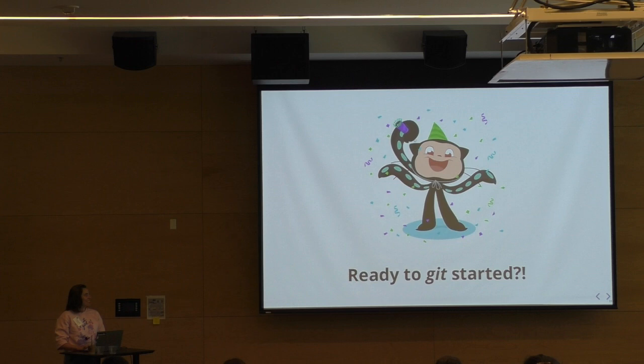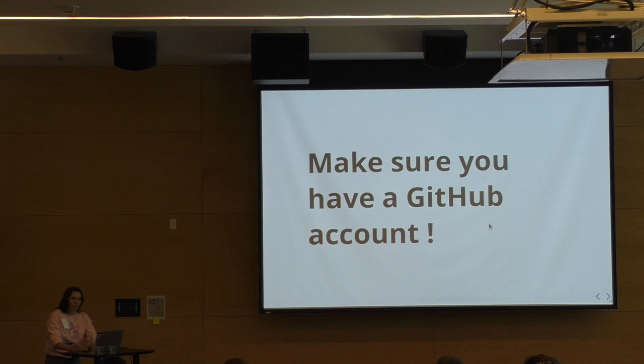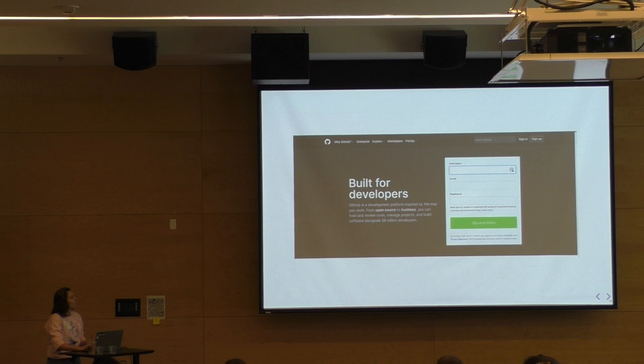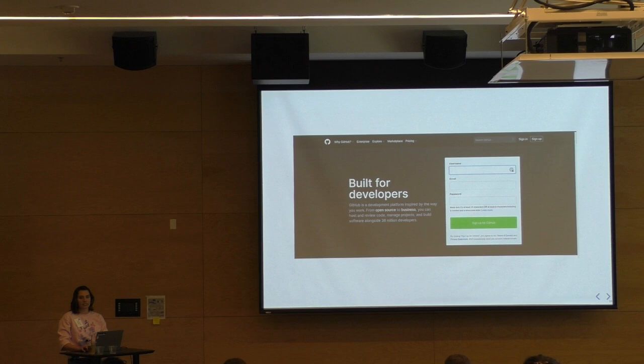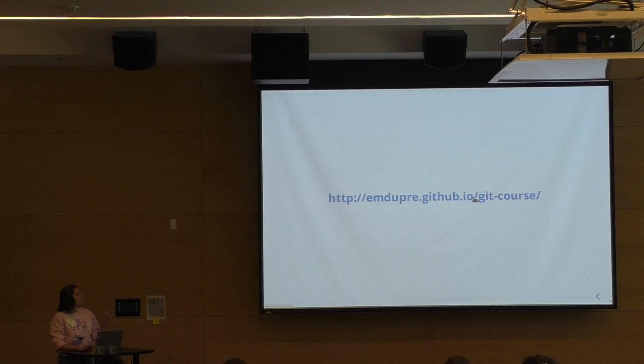If you're ready to get started, please make sure you have a GitHub account — this was in the setup instructions. If you haven't done it already, go to GitHub.com. You'll need a username, email, and password. And once you have a GitHub account, go to the course site — elizabethdupree.github.io slash git-course — where all the materials are available.